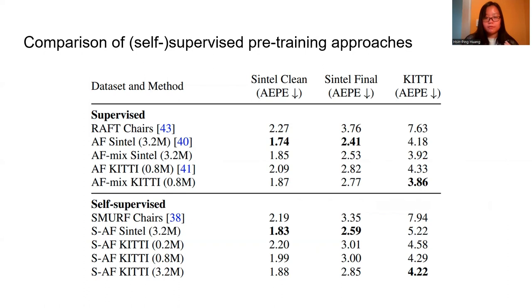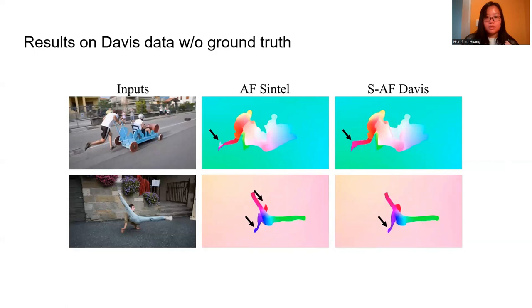The small performance gap suggests our approach can successfully extend Autoflow to unlabeled target domains. We show that our model can learn a better dataset for the Davis data when ground truth is not available.